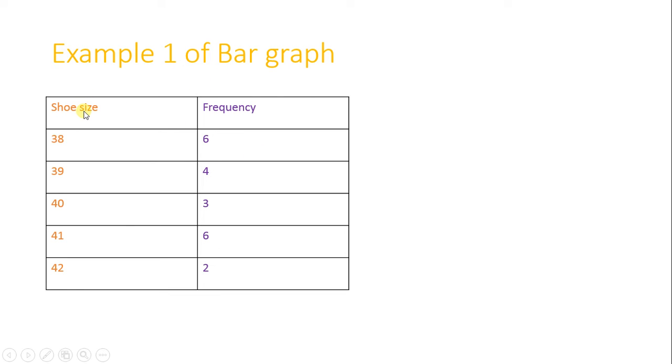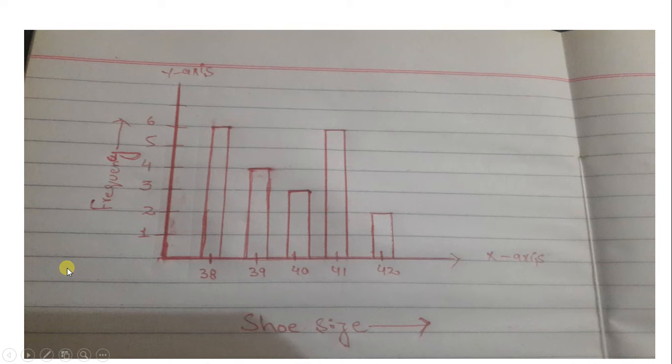So let's have an example of the bar graph here. We have shoe size and the frequency of the shoe size, like how many times or what is the frequency of the 38 shoe size, 39 shoe size, and so on. I will take the frequency towards the y-axis and the shoe size towards the x-axis.